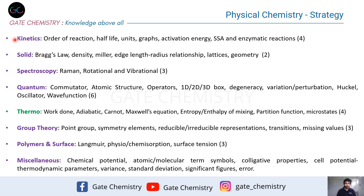Solid state is a must-do topic because it requires very little preparation time, and two questions are always present — typically one two-marker and one four-marker. Questions come from Bragg's law numericals, the density formula (d = ZM / a³Nₐ), Miller indices, the relationship between edge length and radius in different lattices, and properties of lattice systems like monoclinic or triclinic.